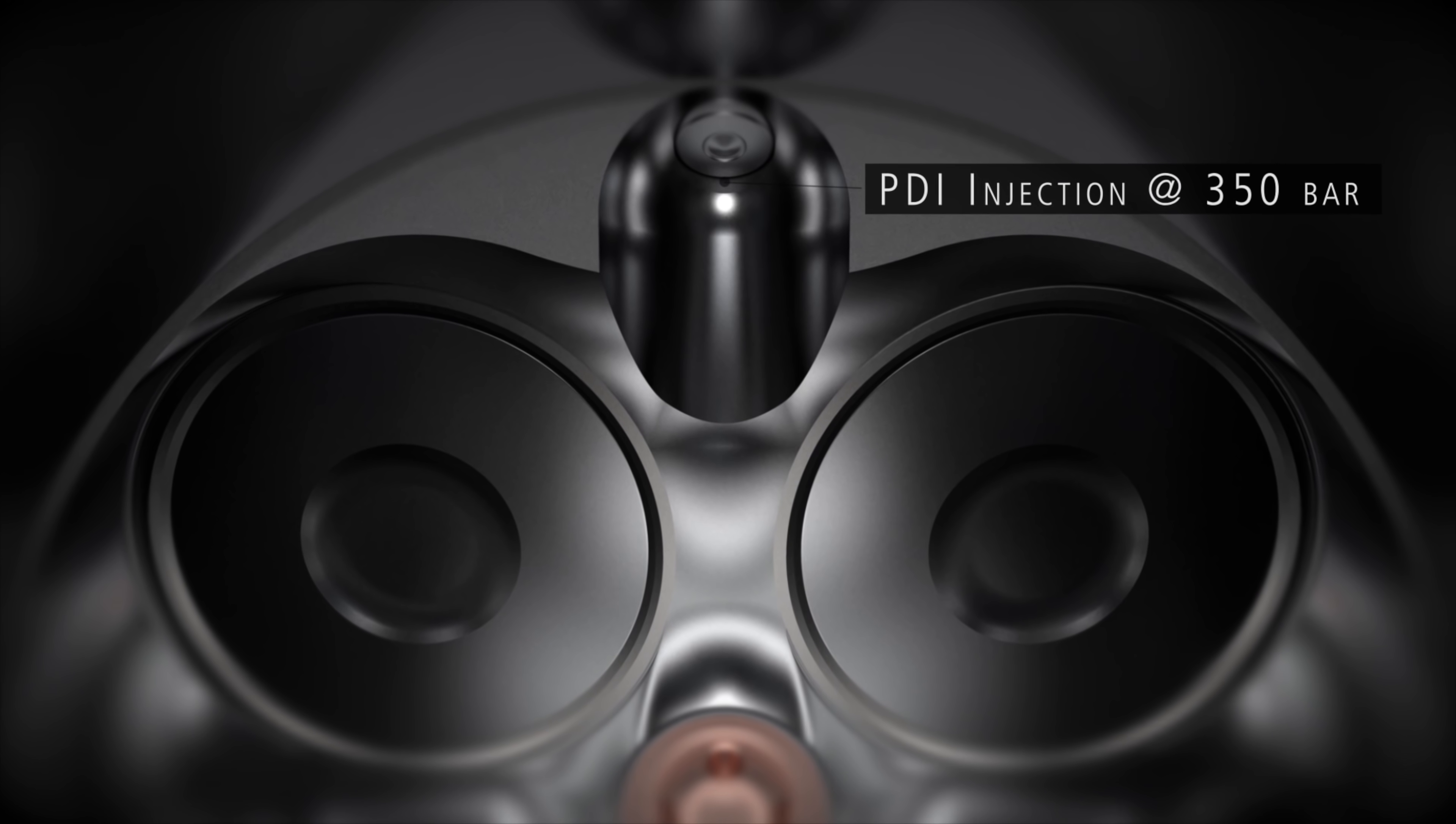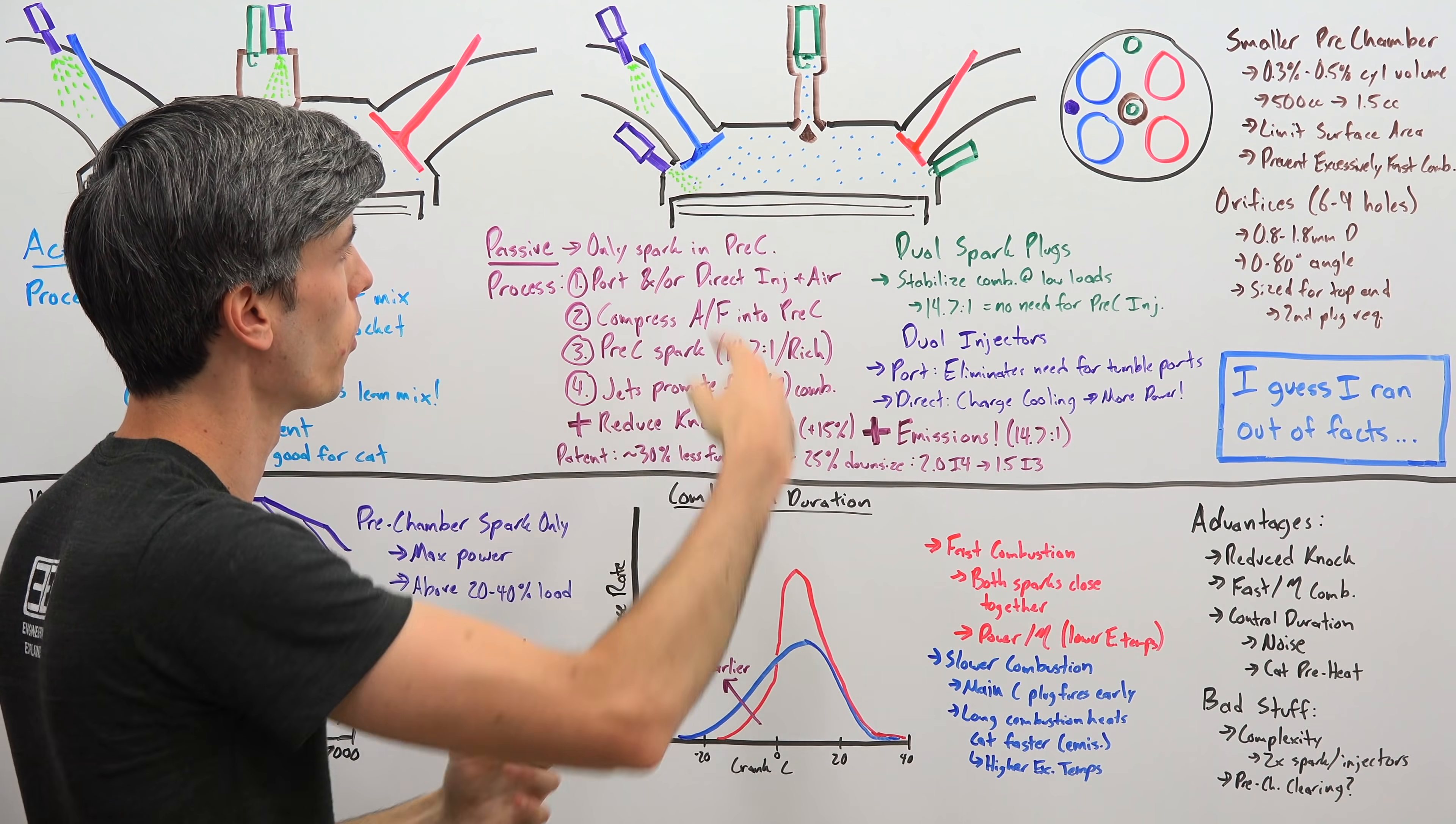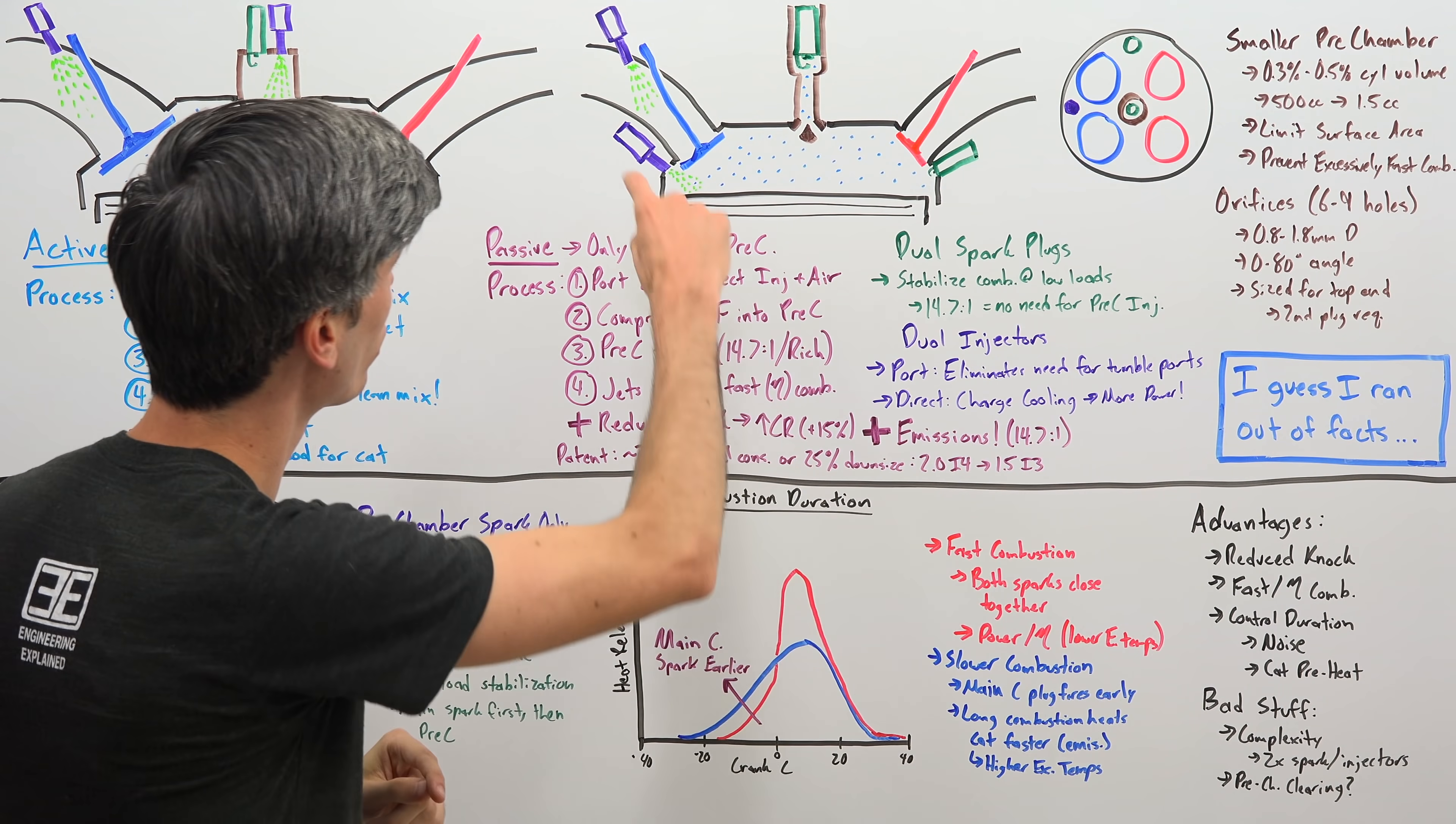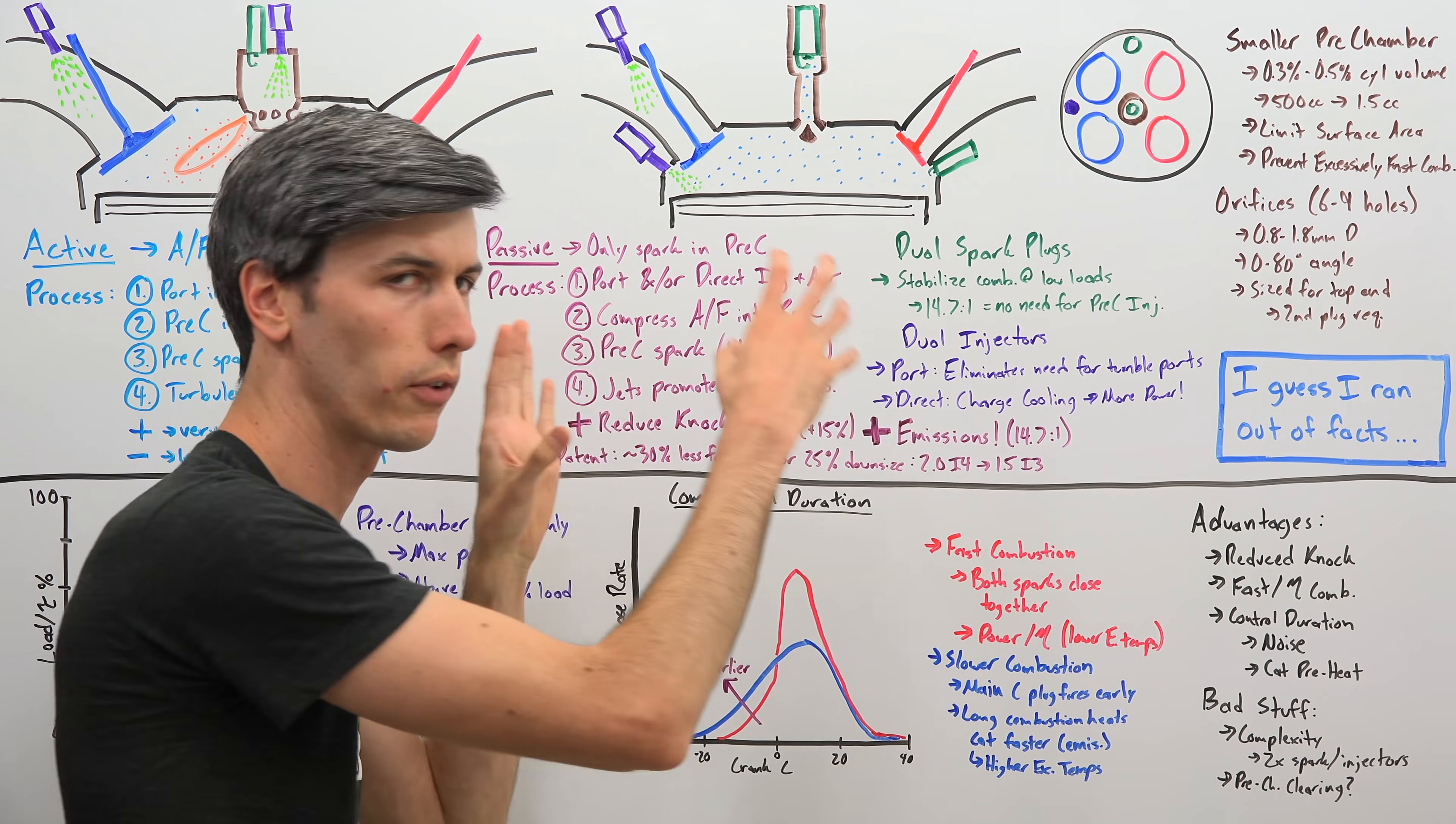Now you'll also notice that it has dual fuel injectors. So why is it doing this? Well, by using a port injector, that gives it plenty of time to mix the air-fuel ratio. And by doing this, it eliminates the need of having tumble ports where the intake air is caused to tumble as it enters within the cylinder. When you use direct injection, you have less time for that air and fuel to mix. And so you use tumble ports in order to have that air swirl so that you can mix that direct injection fuel. The challenge with this is those tumble ports can restrict your air flow coming in, which isn't ideal for engines that are going for high horsepower.